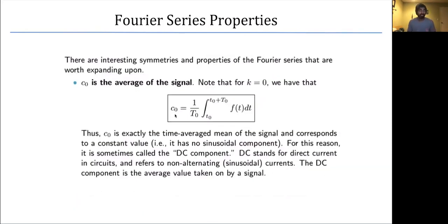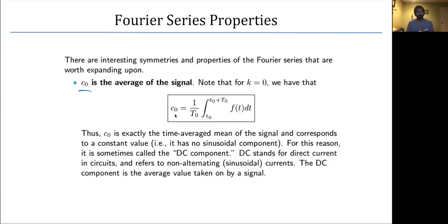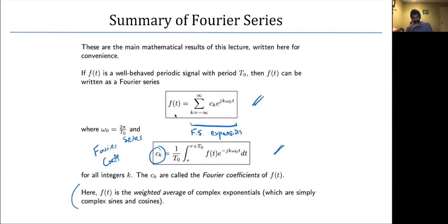Today — remember when we first learned about signals and systems we first introduced them and then moved on to their properties — just like signals and systems, the Fourier series has properties that are interesting and relevant. The first one is C₀. C₀ is a very special coefficient: it turns out to be the average of the signal.